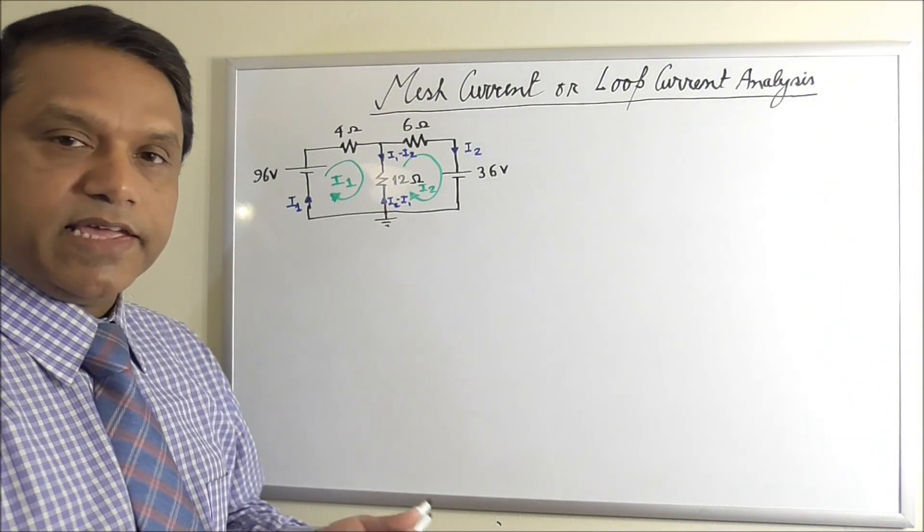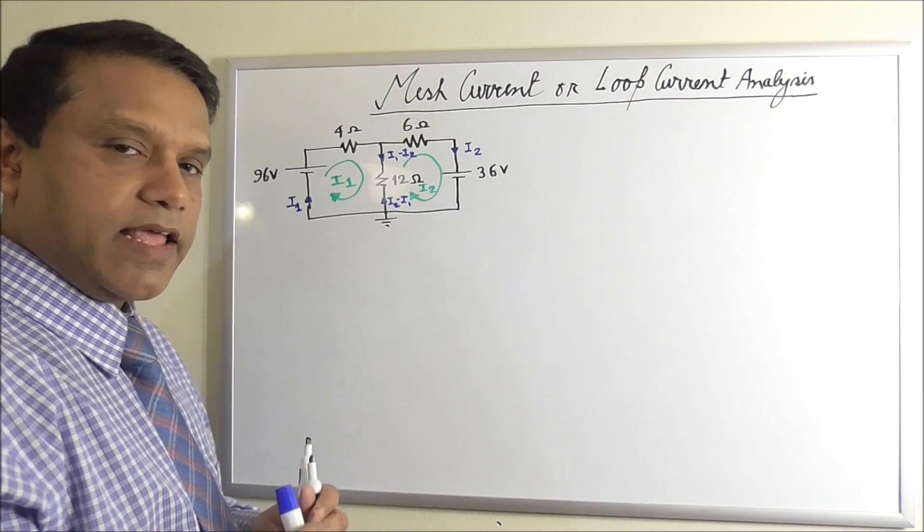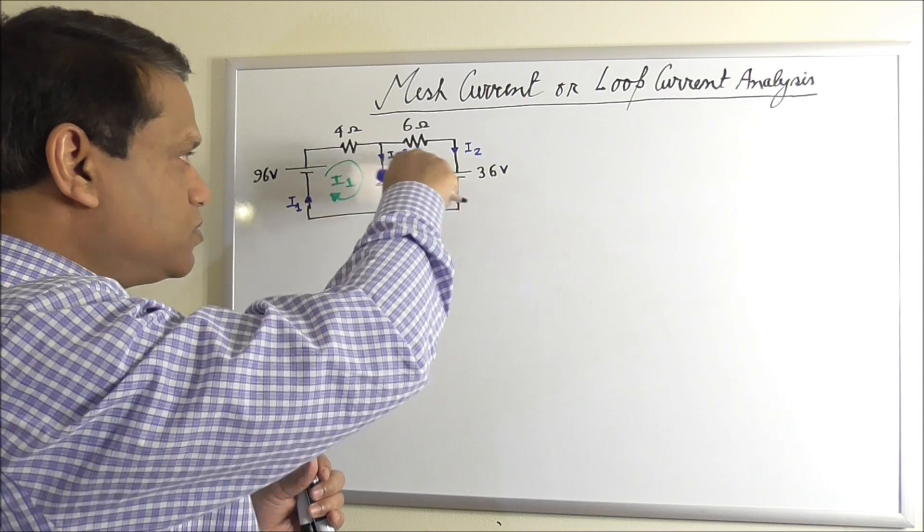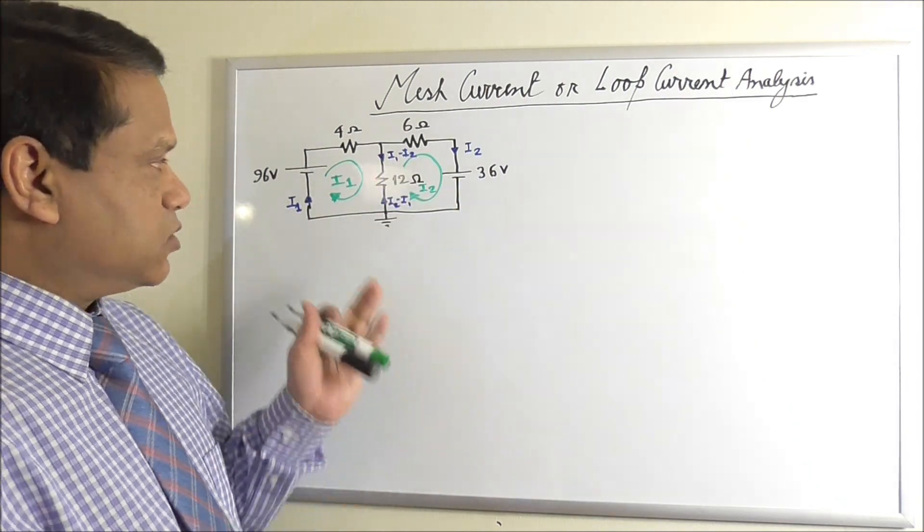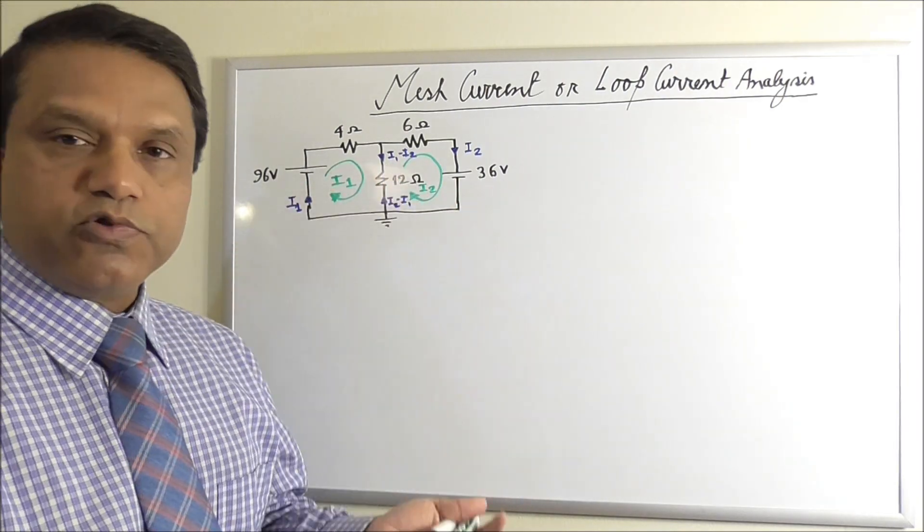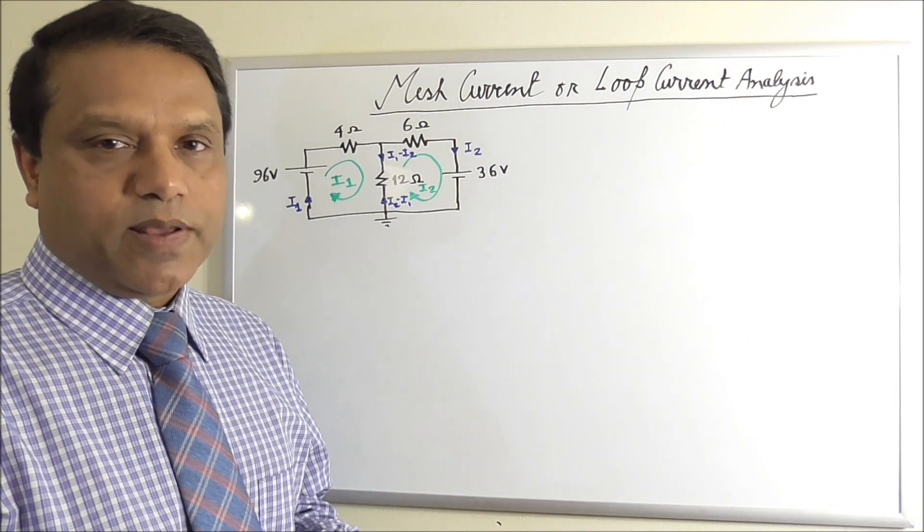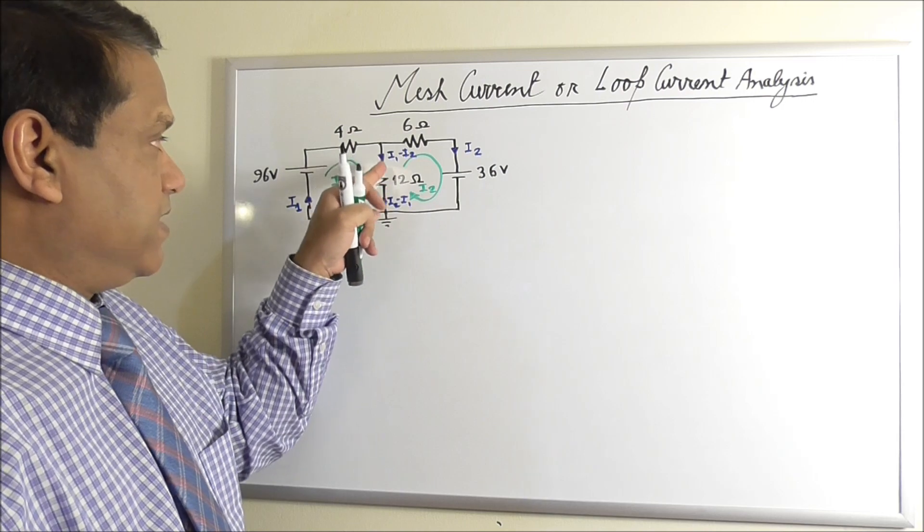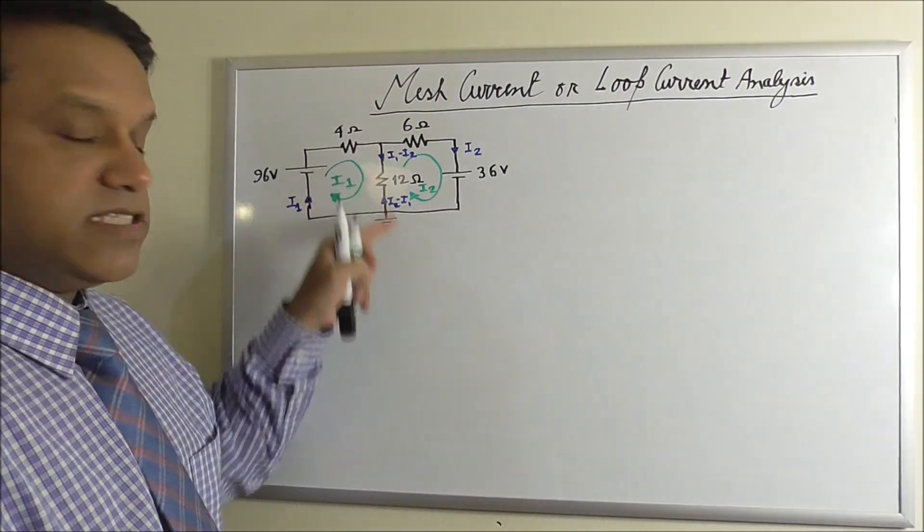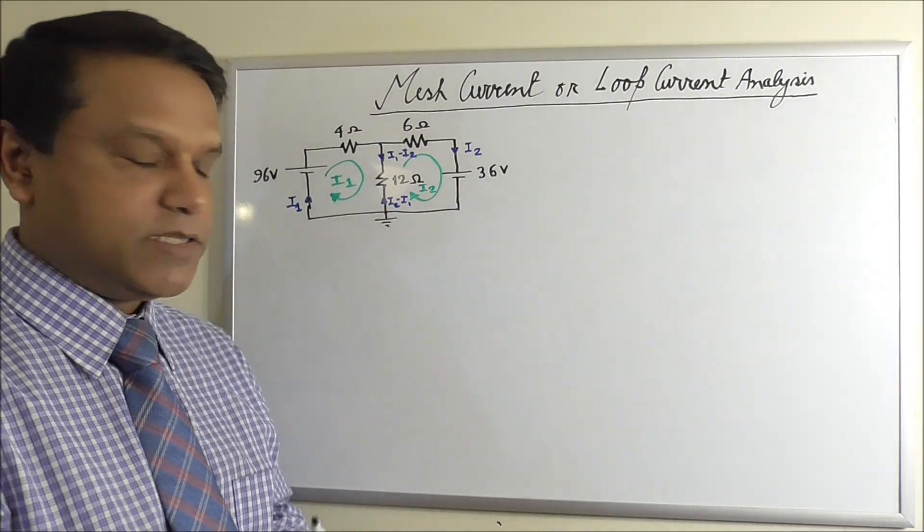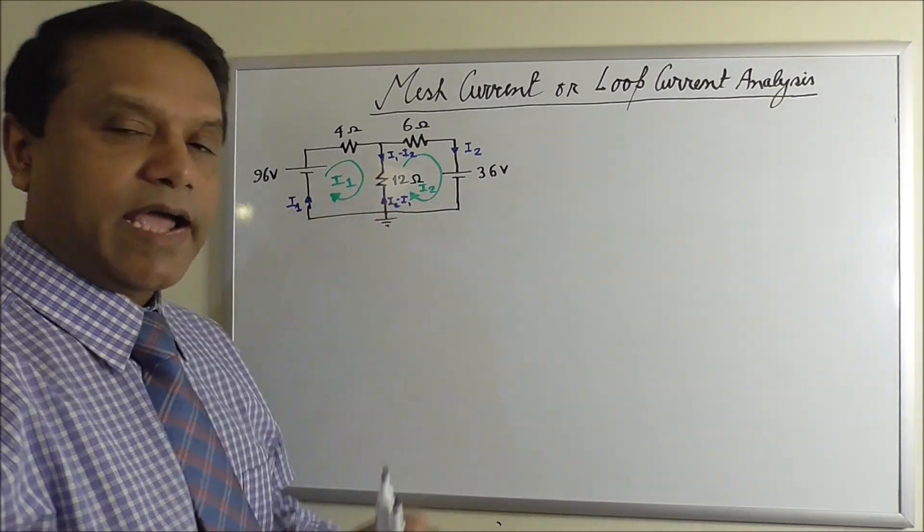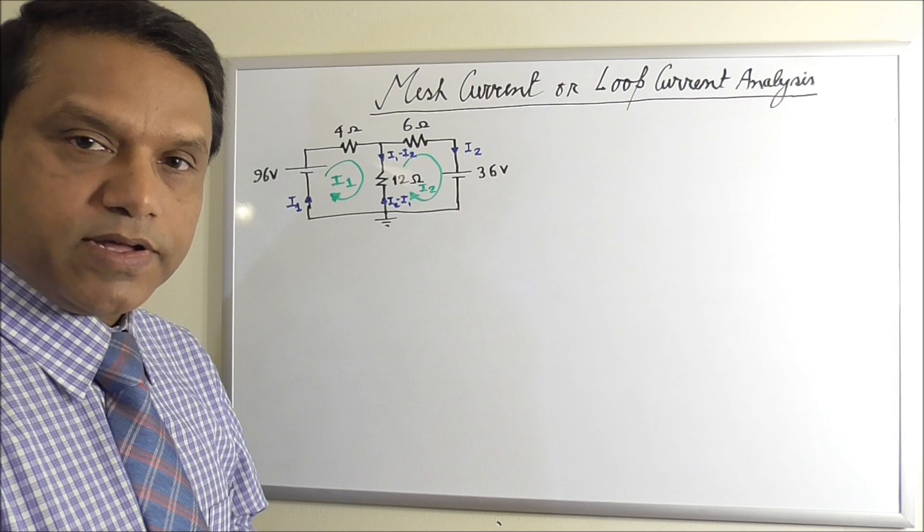Now we'll apply KVL equations. Just like in branch current analysis, we'll apply KVL equations in the smaller loops. And in this case, we'll have two equations and we have two unknowns. So we don't have to write the KCL equation. Actually, KCL is already implemented here by assuming this current is I1 minus I2 or in upward direction, I2 minus I1.